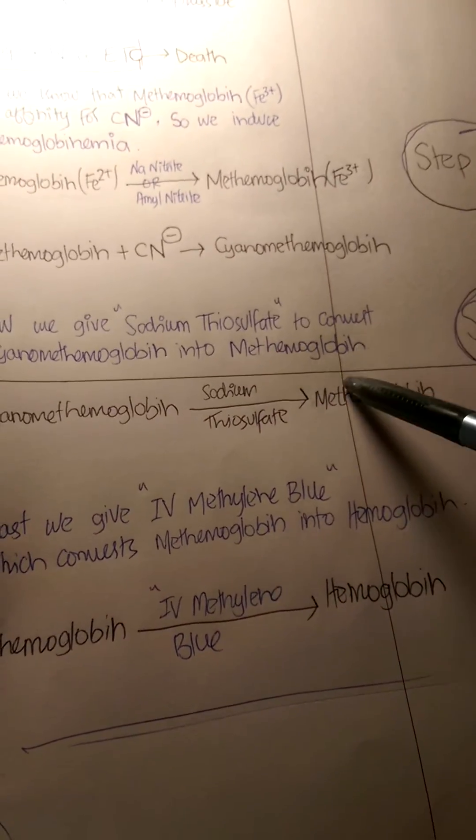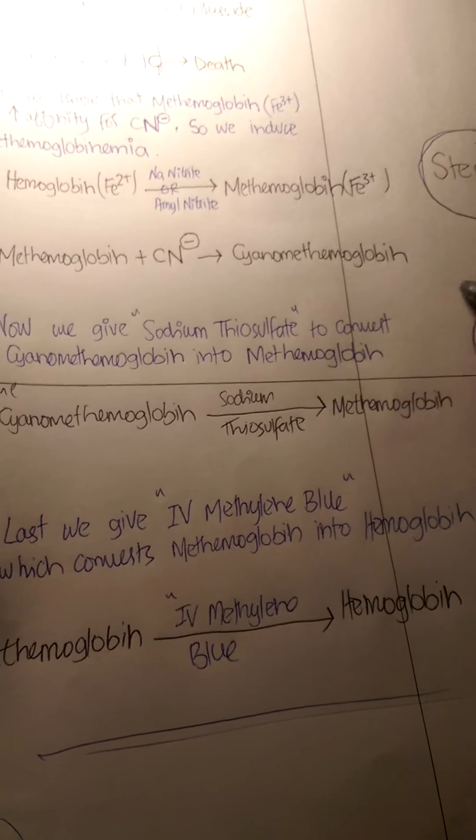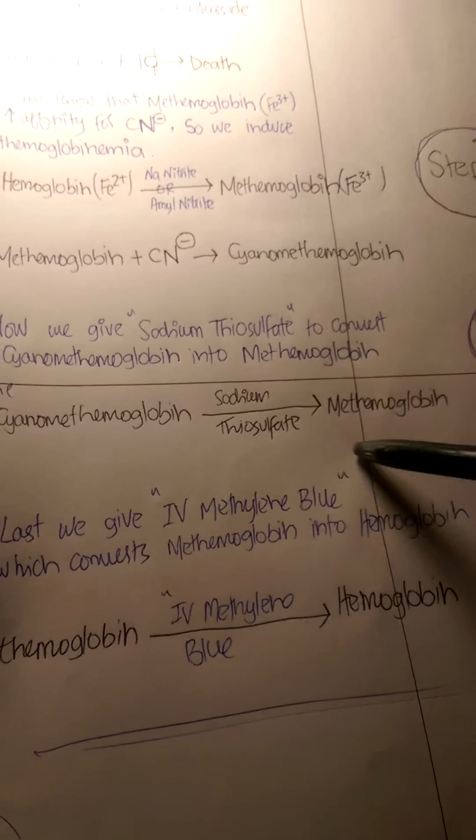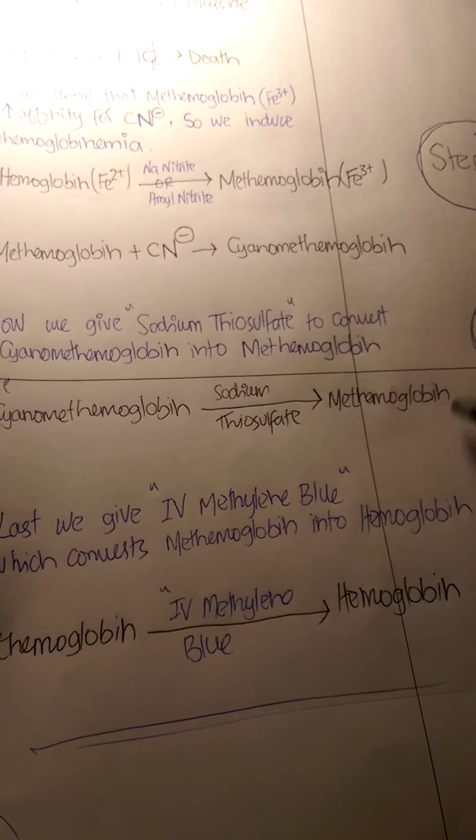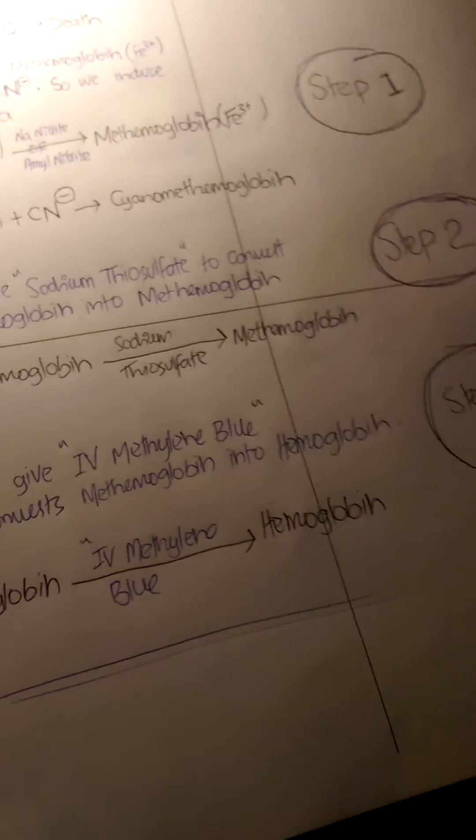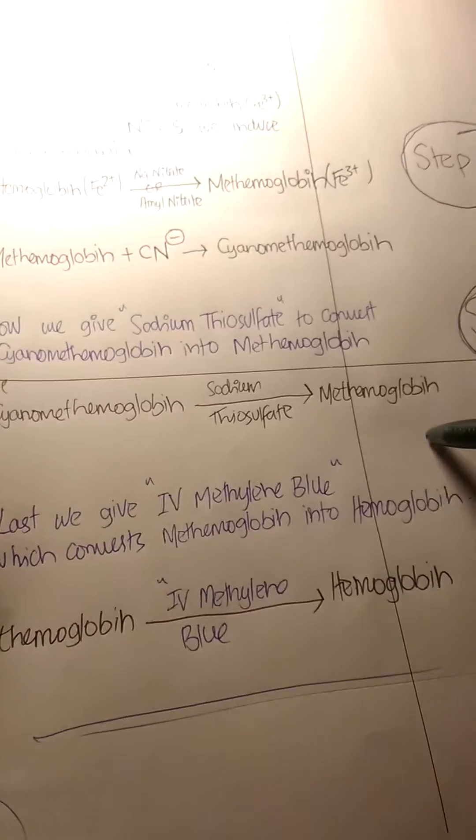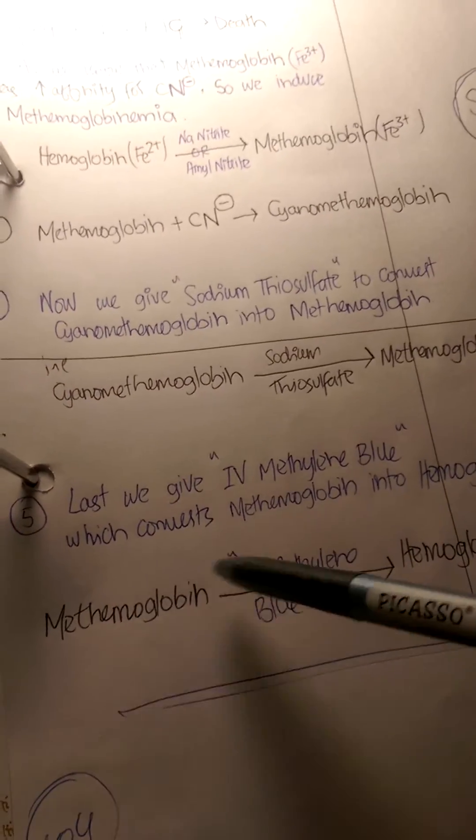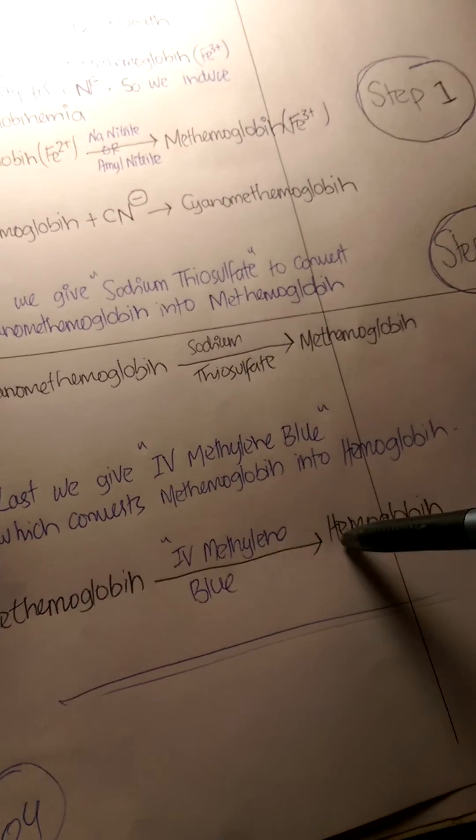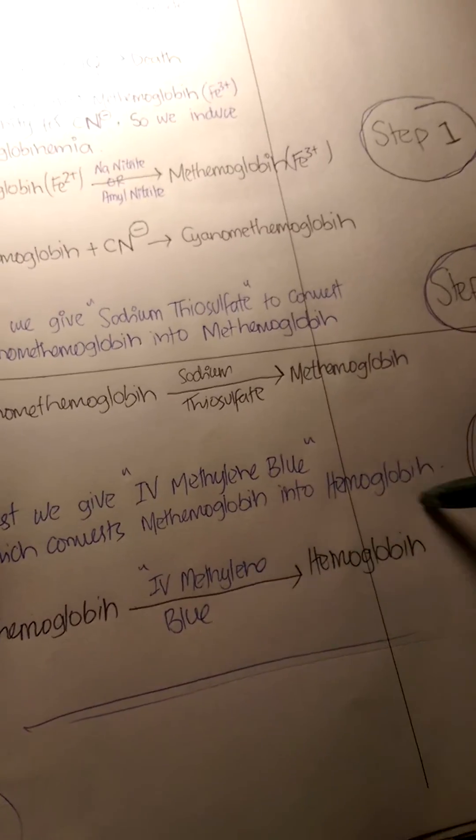As we discussed earlier, we don't like methemoglobin too much because it has a decreased ability to bind oxygen. So step three is that we give IV methylene blue, which converts methemoglobin back into hemoglobin.